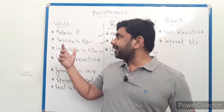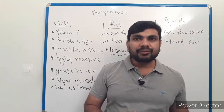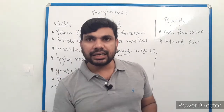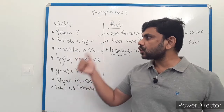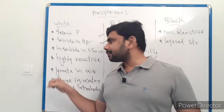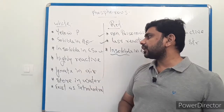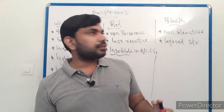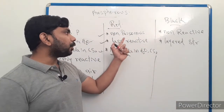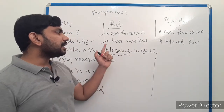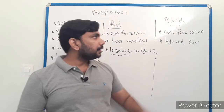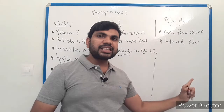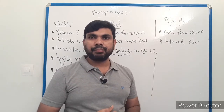To summarize: white phosphorus, also called yellow phosphorus, is highly reactive, soluble in water, insoluble in carbon disulfide, and ignites in air. Red phosphorus is non-poisonous, less reactive, and insoluble in both water and carbon disulfide. Black phosphorus is non-reactive and has a layered structure.